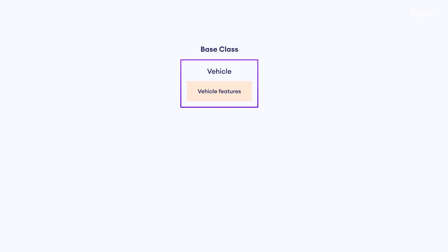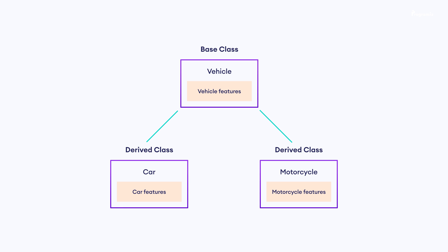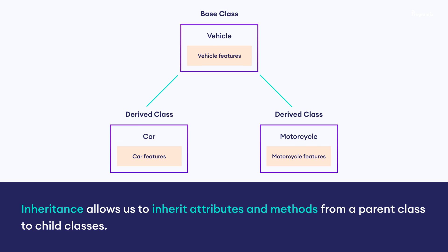We can then derive a car class from the vehicle class. In doing so, the car class will inherit all the attributes and methods of the vehicle class, and we can later add car-specific features to it. We can also create a motorcycle class that inherits from vehicle in a similar way. This is the basic concept of inheritance — it allows us to inherit attributes and methods from a parent class to a child class.